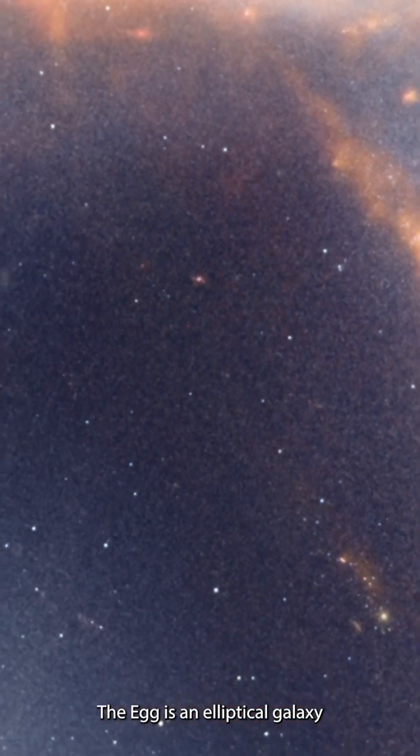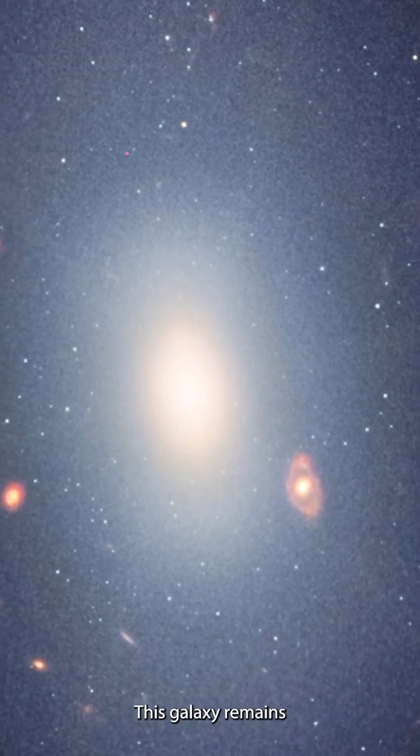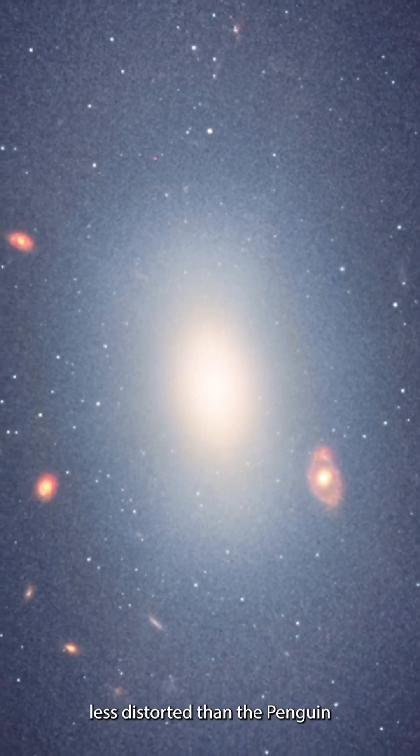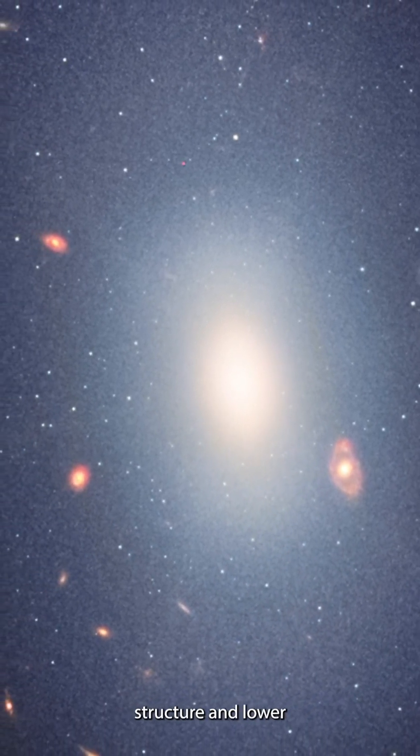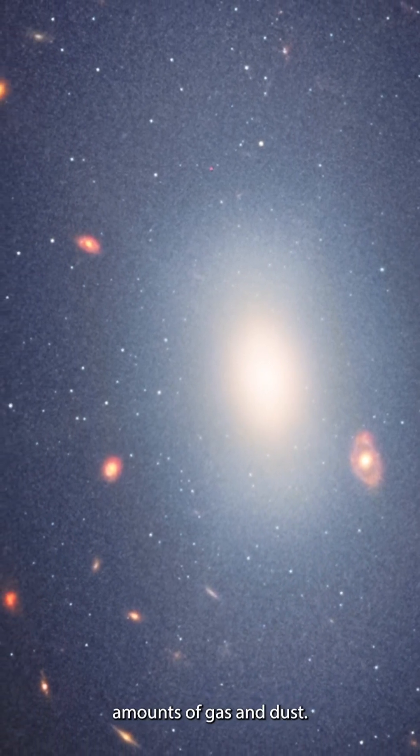The Egg is an elliptical galaxy filled with aging stars. This galaxy remains less distorted than the Penguin because of its compact structure and lower amounts of gas and dust.